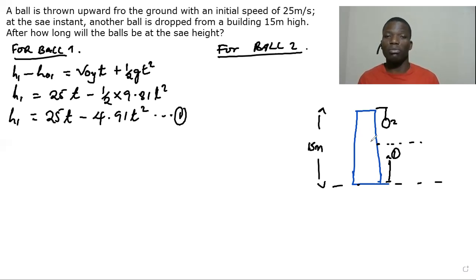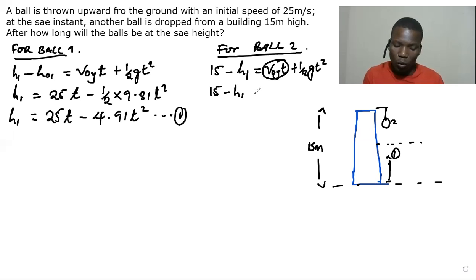So since this is going to be a free fall kind of motion, you are going to see that the relationship between the distance that it's going to cover and the distance that the first ball is going to cover, it will be just the total height of the building minus the distance that the first ball is going to cover. So we are saying the second ball is going to cover a distance 15 meters minus the distance covered by the first ball. So we have initial velocity in the y plus half gt squared. Now you realize that it doesn't have initial velocity because it's just a free fall.